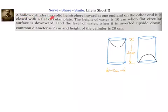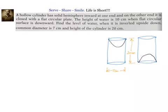A hollow cylinder has a solid hemisphere inward at one end, and the other end is a flat circular plate. The height of water is 10 cm when the flat circular surface is downward. Find the level of water when it is inverted upside down. The common diameter is 7 cm and the height of the cylinder is 20 cm.